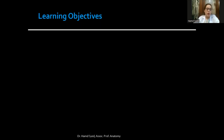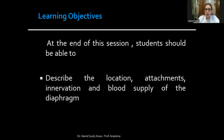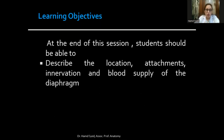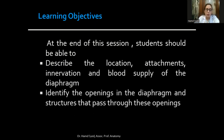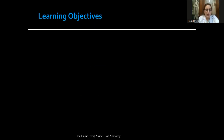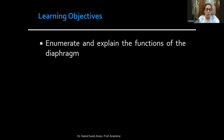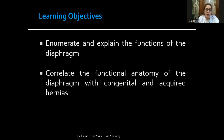Our learning objectives for today's session are that at the end, you should be able to describe the location, attachments, innervation, and blood supply of the diaphragm. You should also be able to identify the openings in the diaphragm and the structures that pass through them, enumerate and explain the functions of the diaphragm, and correlate functional anatomy with congenital and acquired hernias.